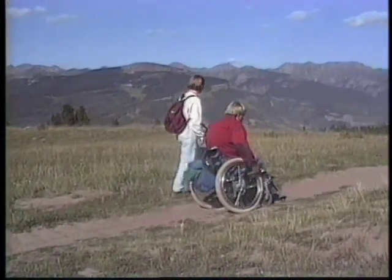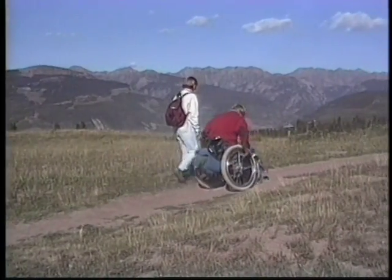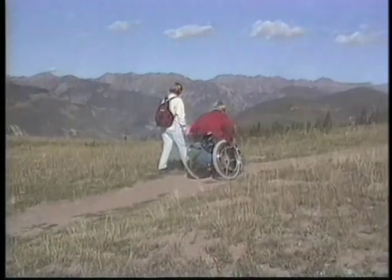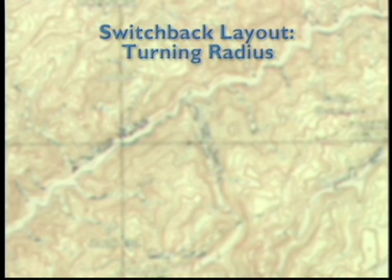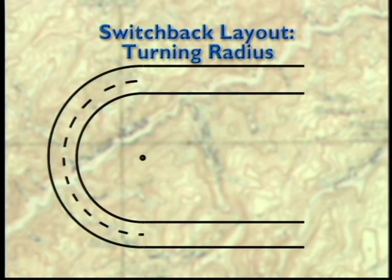No matter how great your trail is, people aren't going to use it unless it meets their needs. No amount of signing or barricading is going to stop them from short-cutting your switchback. You really have to get into the mind of the user. Let's look at how switchbacks differ for various trail users. We'll start with turning radius.